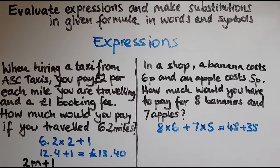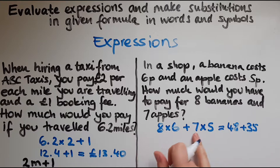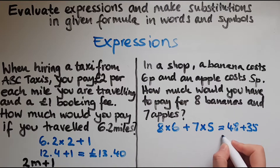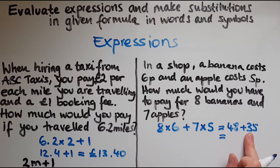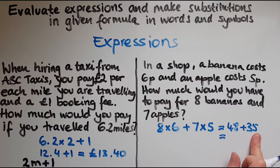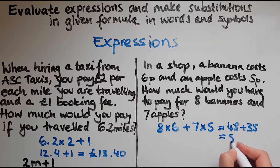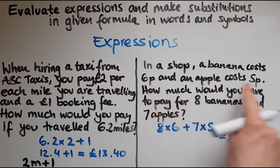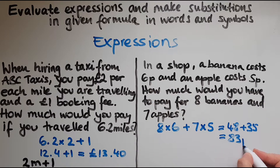Notice how we multiplied first and then added these two amounts together — that's BIDMAS. So 40 and 30 is 70, 8 and 5 is 13, and 70 and 13 is 83. The unit is pence, since we input pence for both, so our answer is 83 pence.